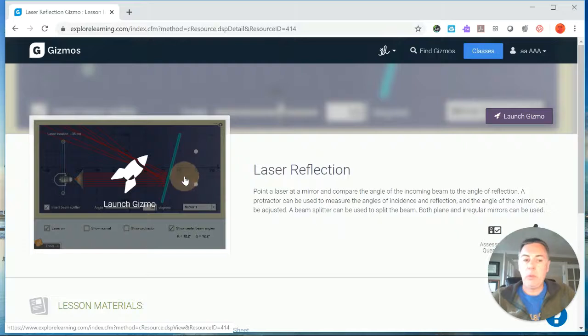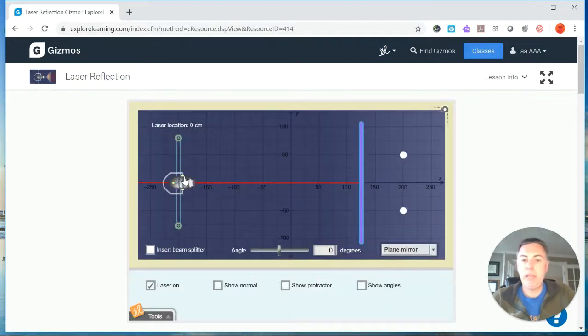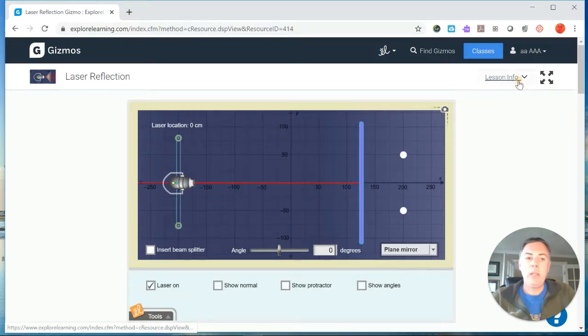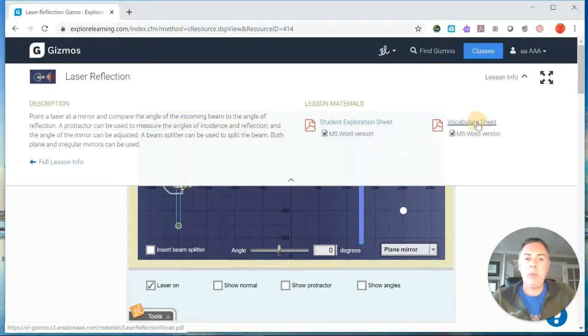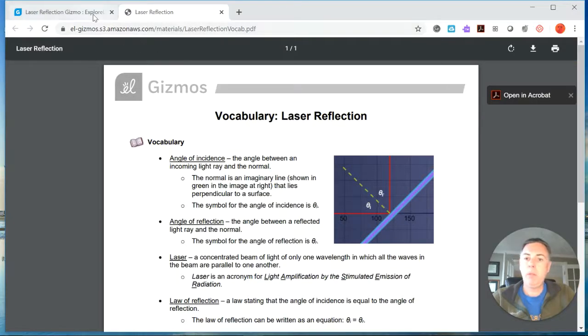And this is the gizmo, so we're going to launch it just like that. As always, when you're doing your gizmo, under the information here we want to get our vocabulary sheet.